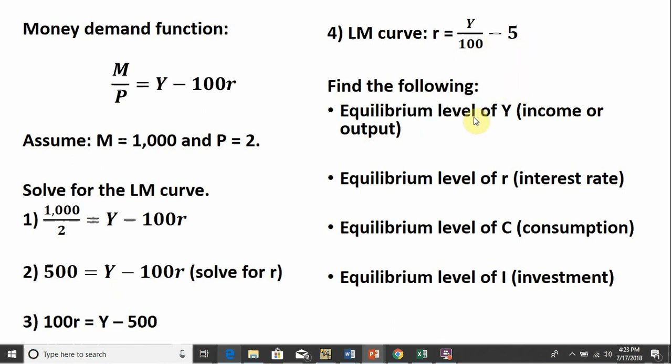R equals Y divided by 100 minus 5. So given our IS curve and LM curve, we can now find all the following information. We can find the equilibrium level of income or output, equilibrium interest rate, the equilibrium level of consumption, equilibrium level of investment spending. So let's get started with the first one. Let's find the equilibrium level of Y.